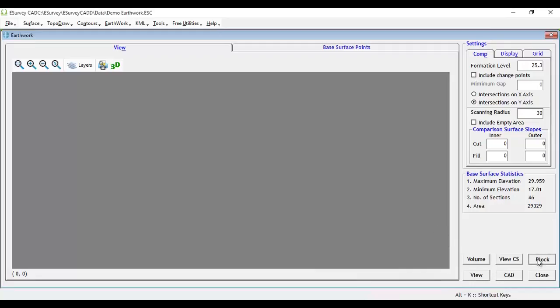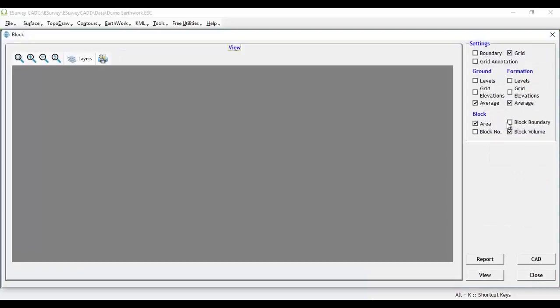Click on the block button and select average item under ground and formation group, then select area, block boundary, block number, and block volume.